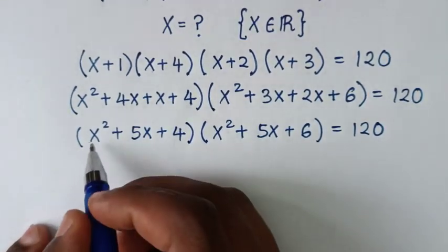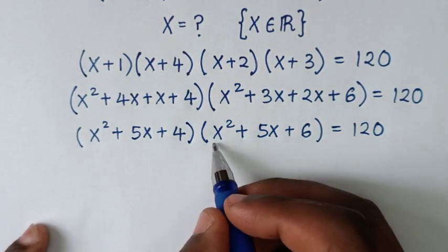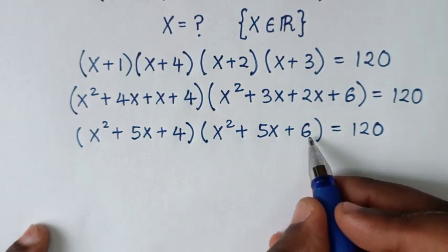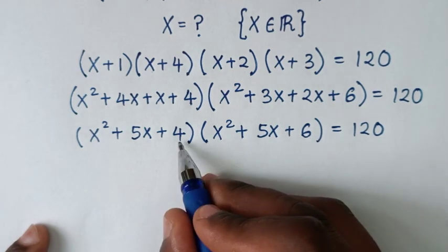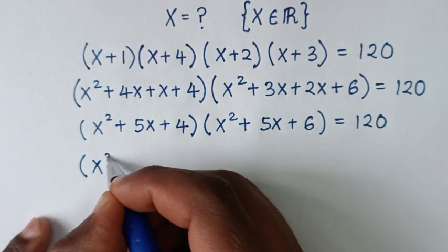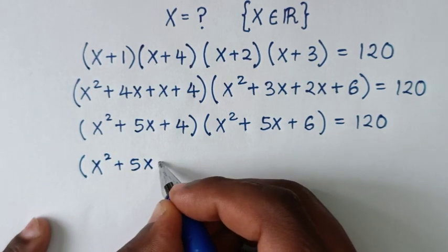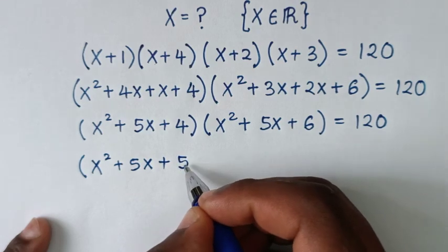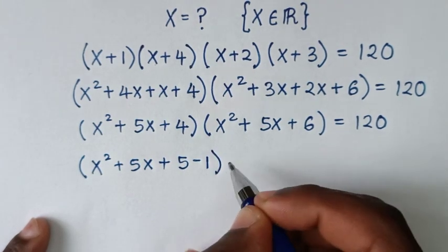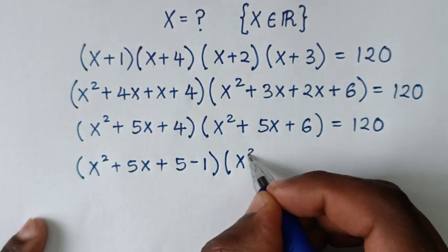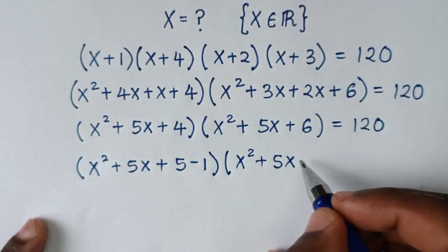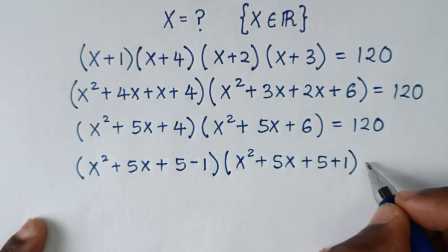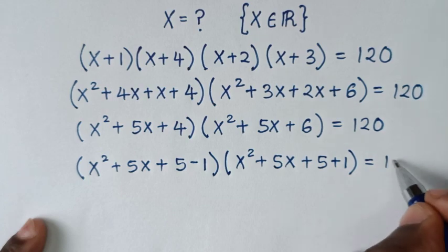Now, from here we can see that x squared plus 5x is common. We notice that 4 is the same as 5 minus 1, and 6 is the same as 5 plus 1. So we rewrite this as (x squared plus 5x plus 5 minus 1) times (x squared plus 5x plus 5 plus 1) equals 120.